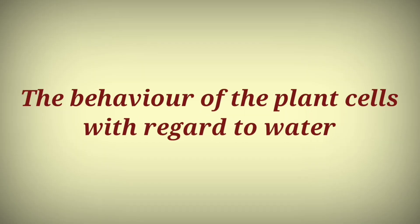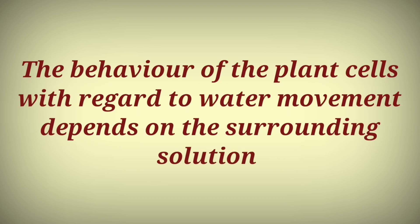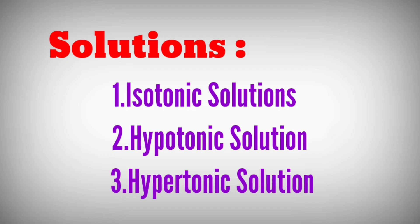The behavior of plant cells with regard to water movement depends on the surrounding solutions — specifically, on the concentration of the surrounding solution. Based on the concentrations, the solutions are of three types: isotonic solutions, hypotonic solutions, and hypertonic solutions.